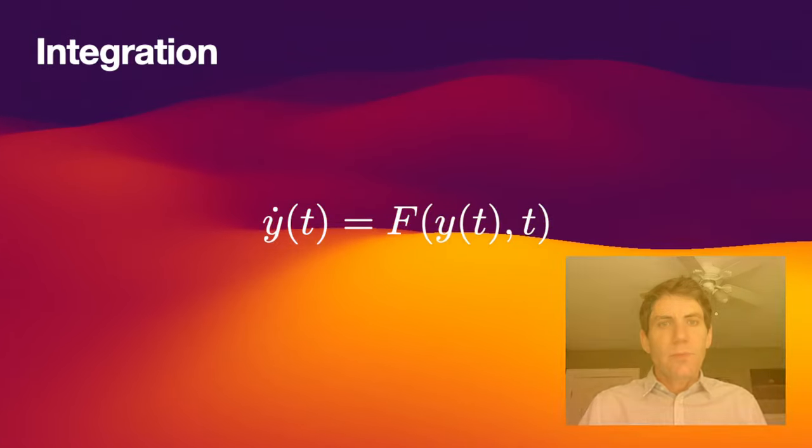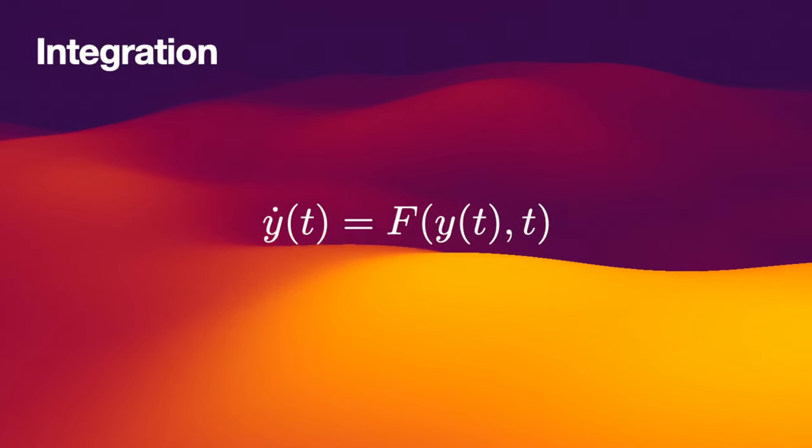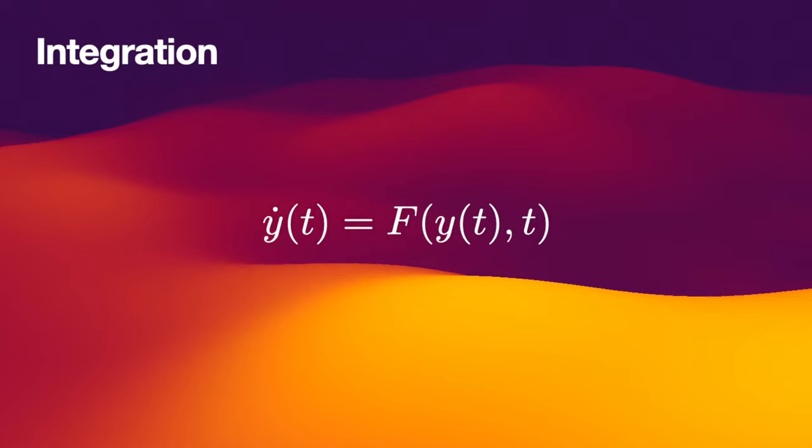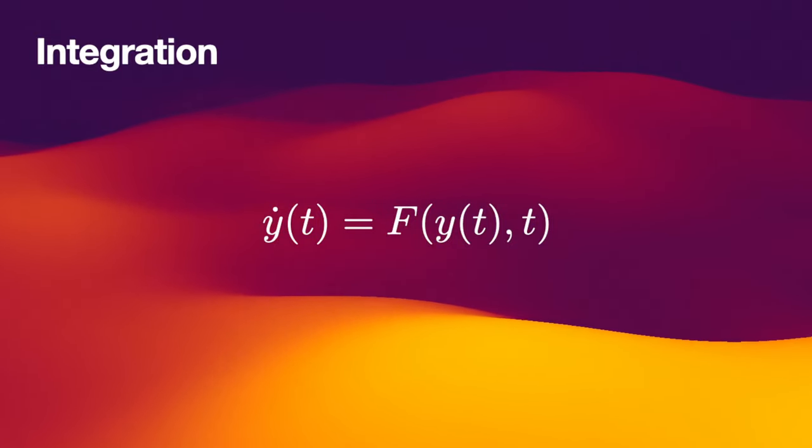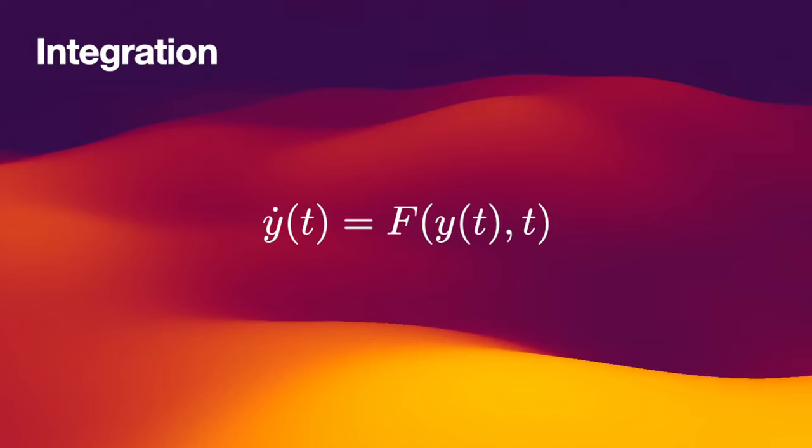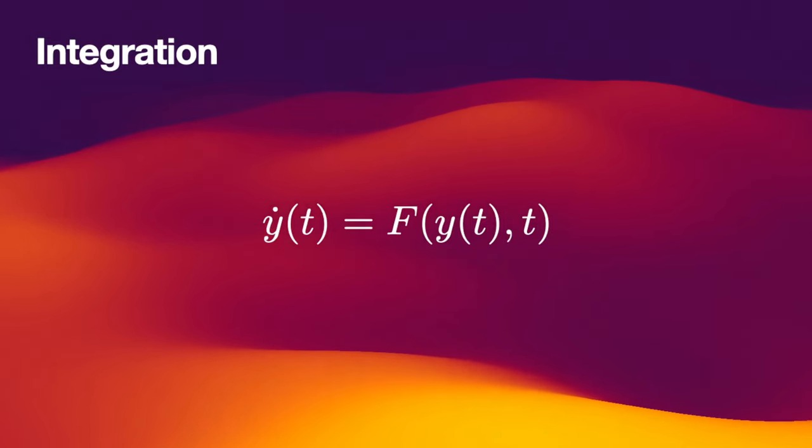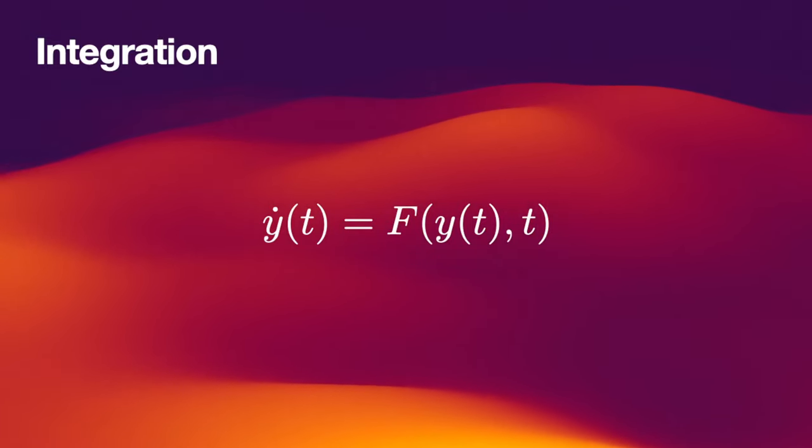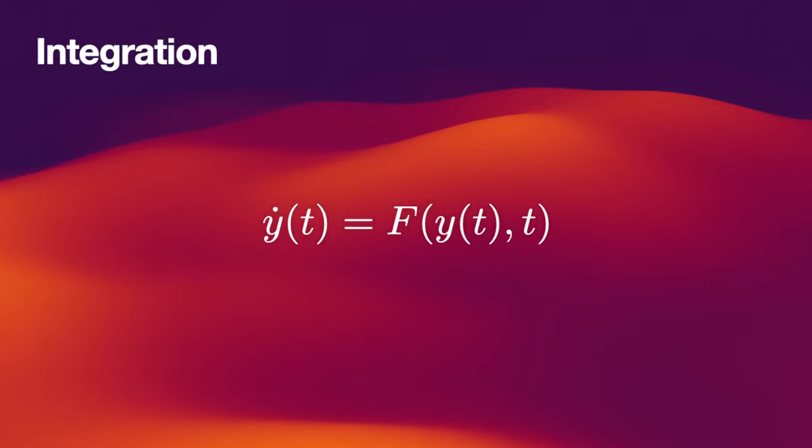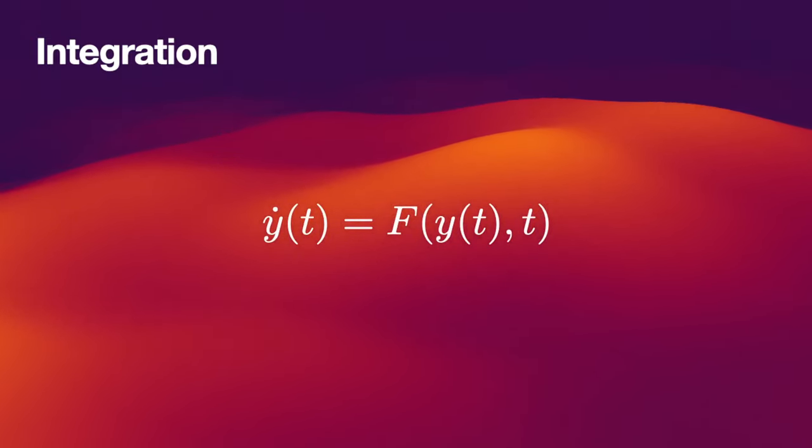We can express an ordinary differential equation in this form: y dot of t equals f of y and t. This is a standard form for an ordinary differential equation, and we can express the n-body problem in this form. In that case, f would include the gravitational forces.